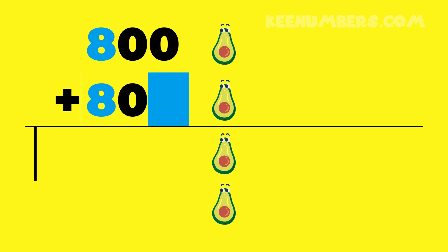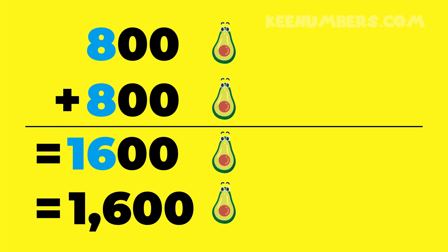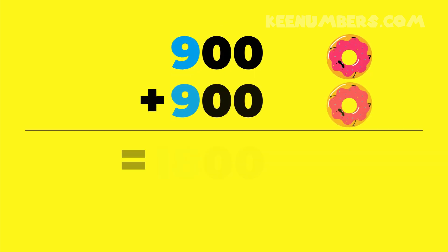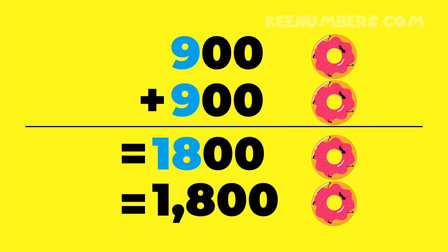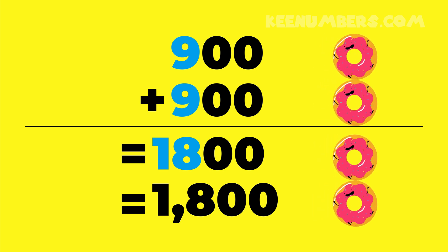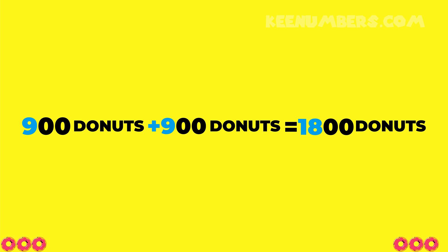Similarly, 800 avocados plus 800 avocados — that's 1600 avocados. Or 900 donuts and 900 donuts — that's 1800 donuts, because 9 plus 9 is 18. That's why we are counting the hundreds so easily. 900 plus 900 — that's 1800.